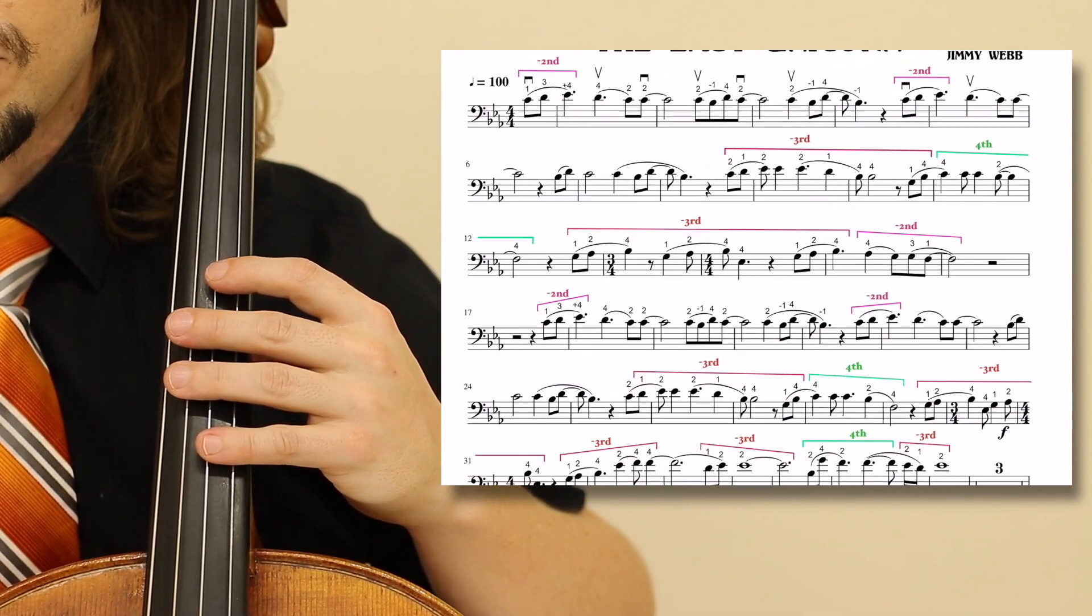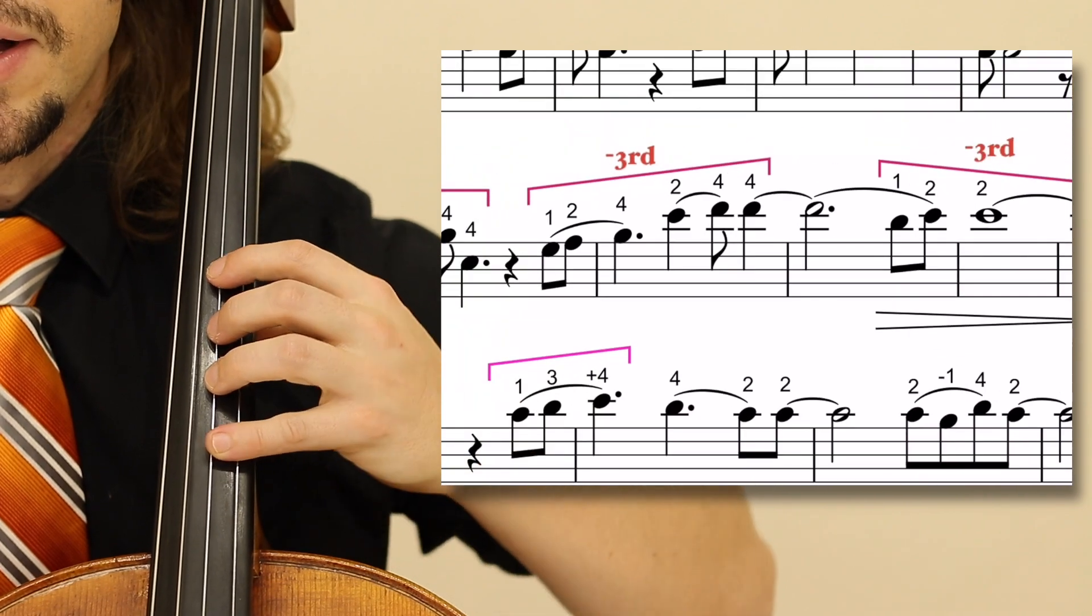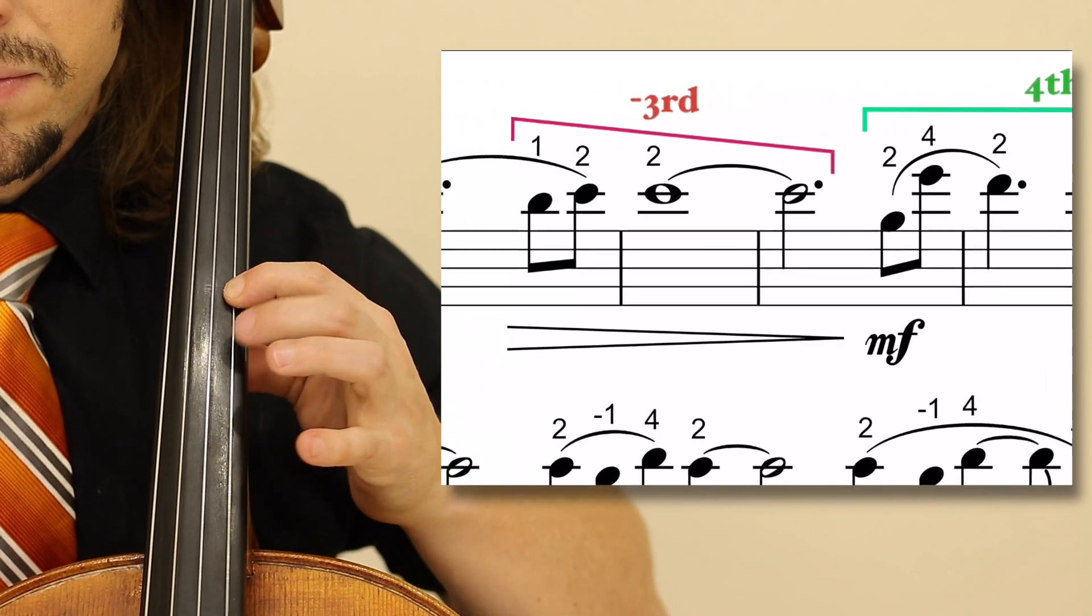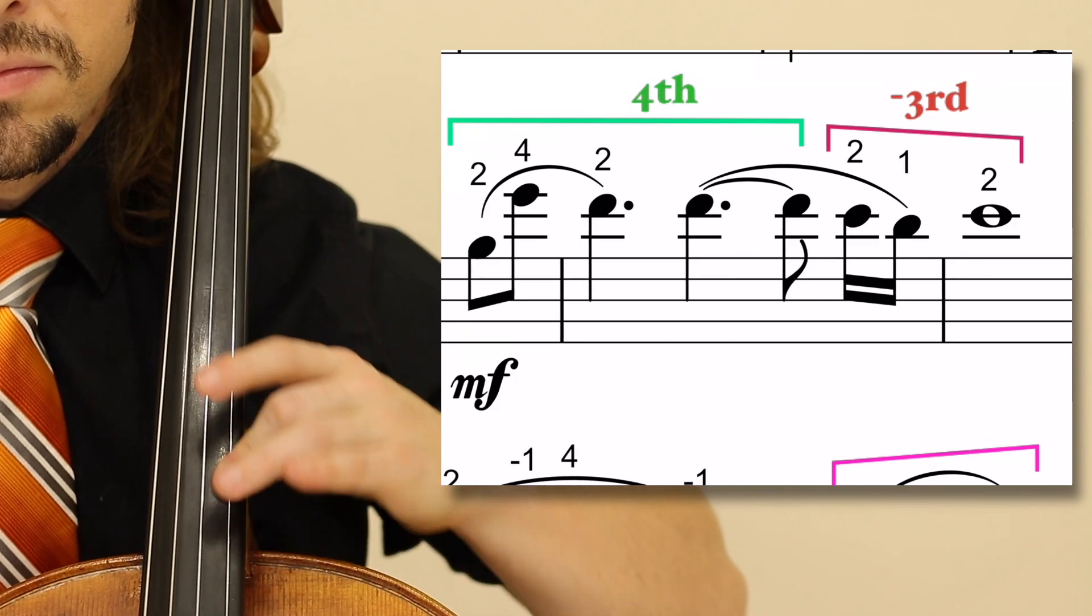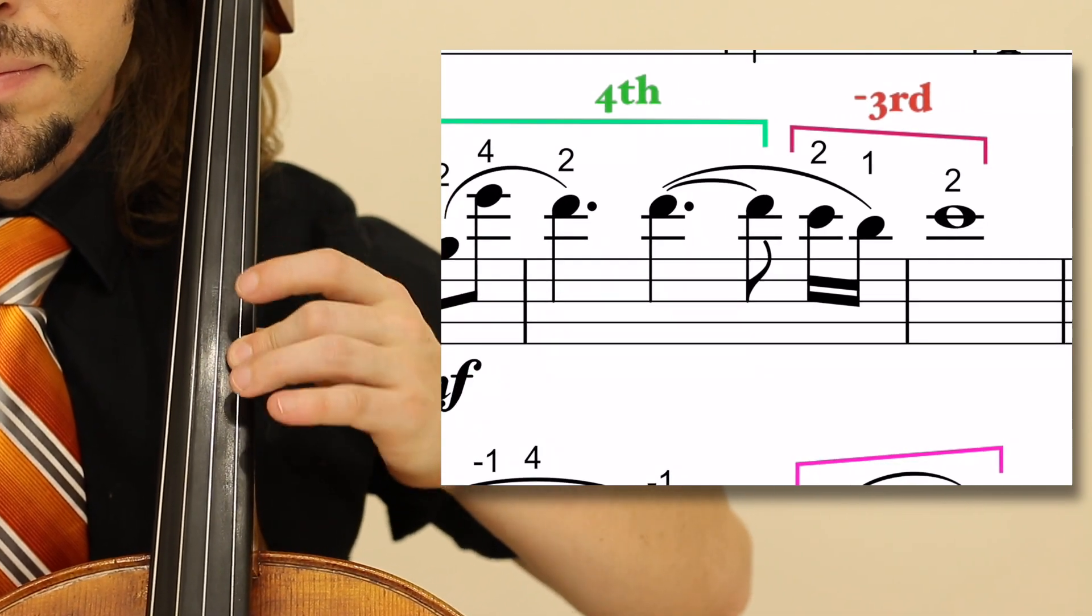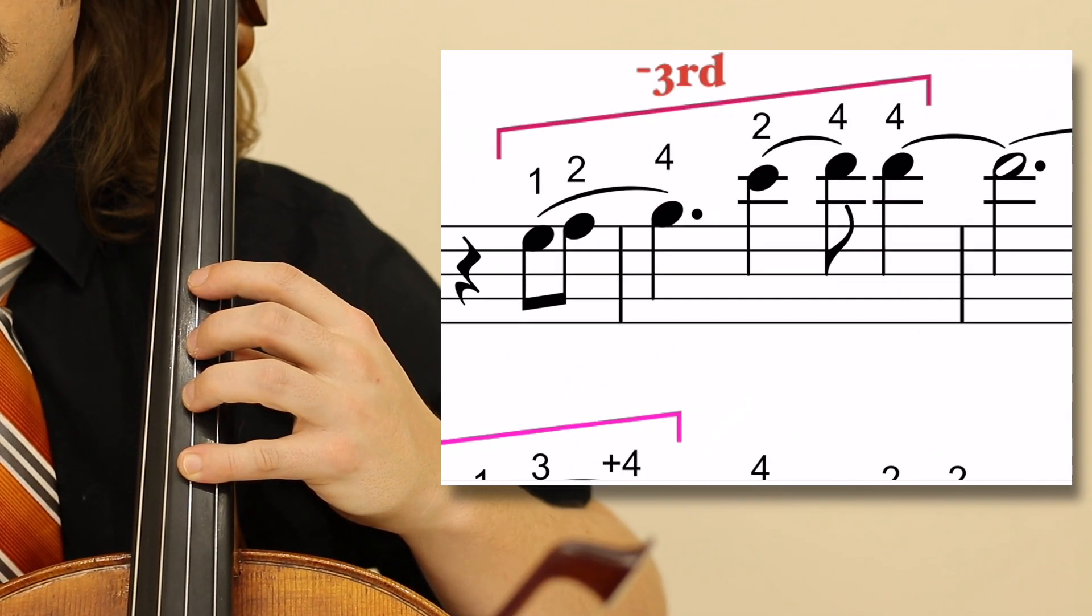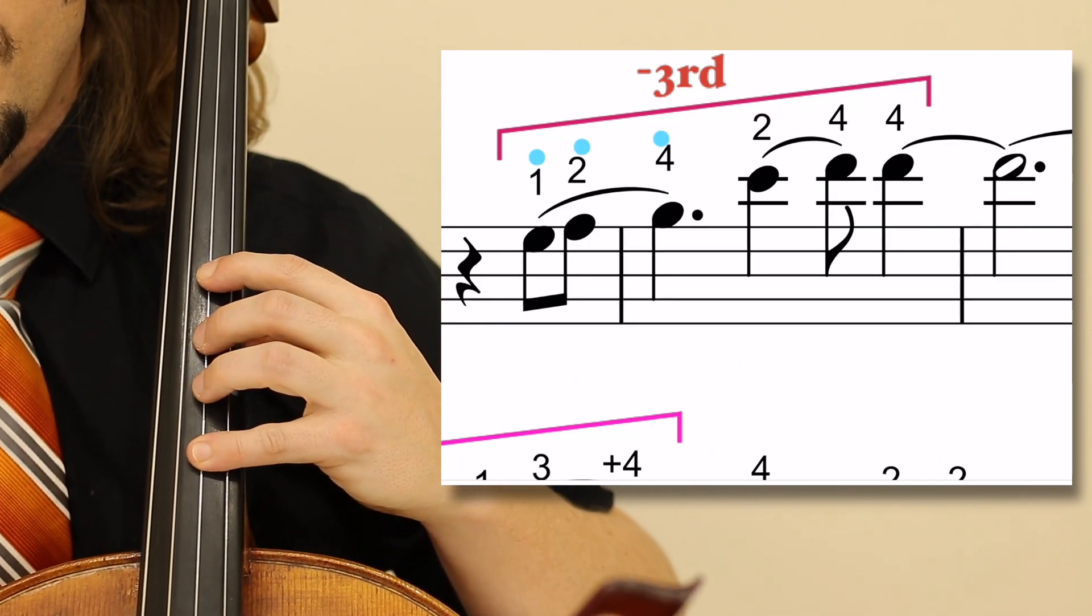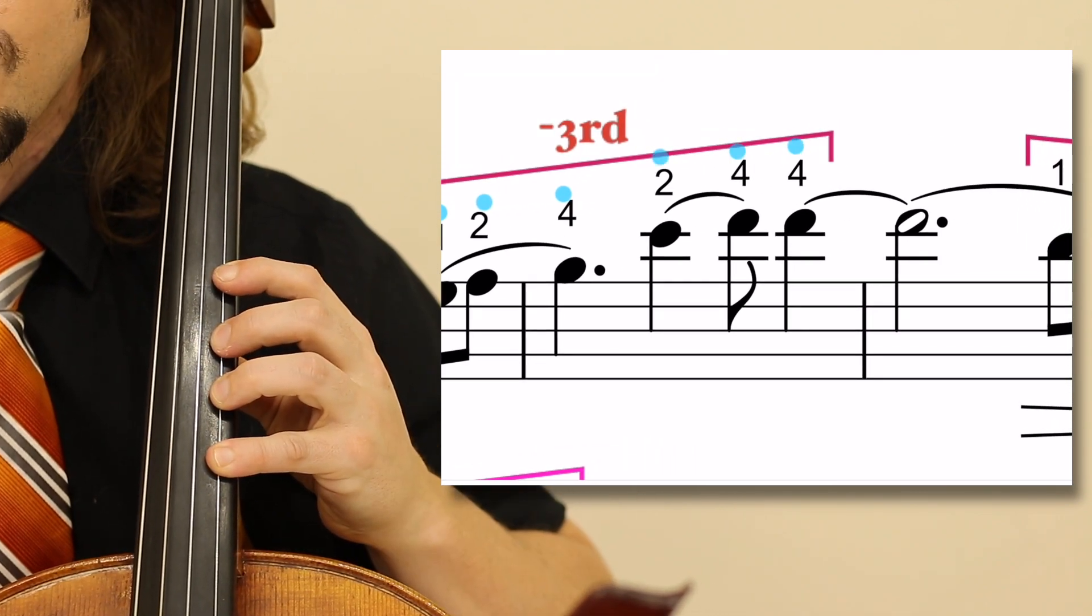The melody changes in measure 32, where we will begin with the pickup. I will play it for you and then explain the fingerings. Now this starts, of course, in the lower third position, starting pickup to 32: one on the G natural, two on the A flat, four on the B flat, crossing over to the E flat, four, four, which are F naturals.